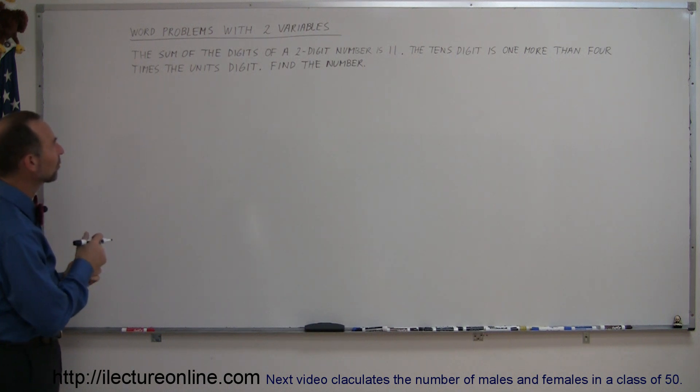It says here that the sum of the digits of a two-digit number is 11. The tens digit is one more than four times the units digit. Find the number.